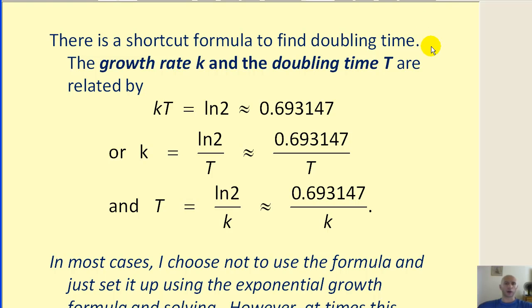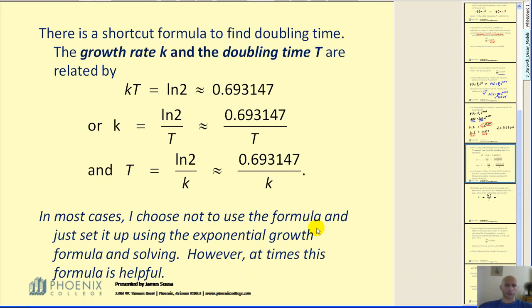Let's take a look at a shortcut formula to find doubling time. The growth rate k and the doubling time T are related as follows. As I mentioned in the previous example, k times T equals natural log 2. Now they're using a capital T here just to denote that this time is the doubling time. So notice how if I want to find the growth rate, I can simply divide natural log 2 by the doubling time. If I want to find the doubling time, we can just divide natural log 2 by k. Now in most cases, I like to use the exponential equation formula and set it up and solve like we did in the previous example. But sometimes these shortcuts can be handy.